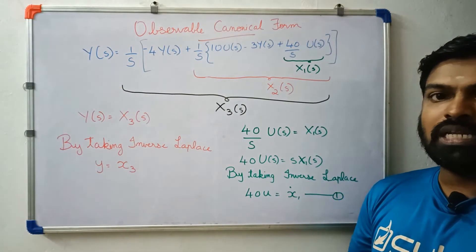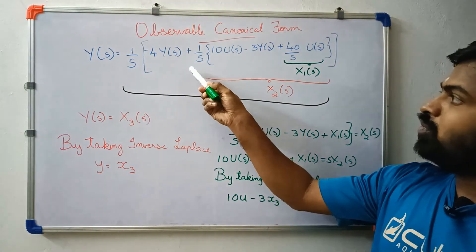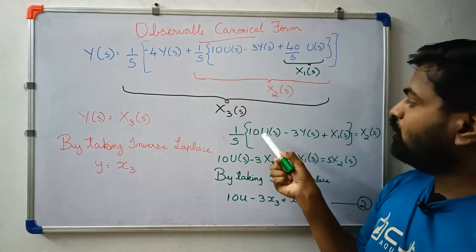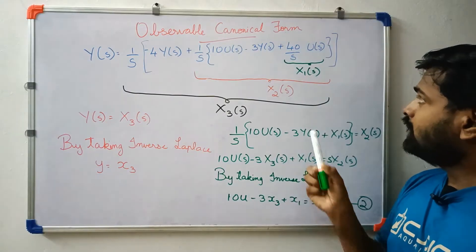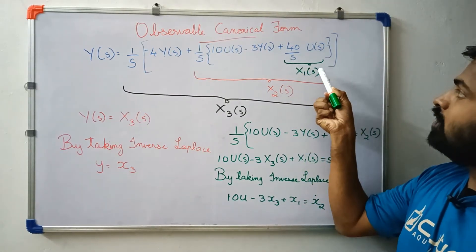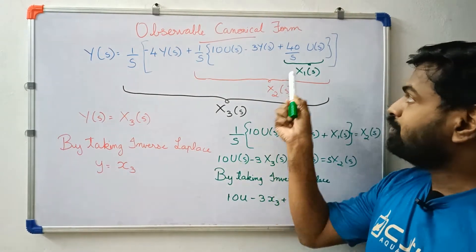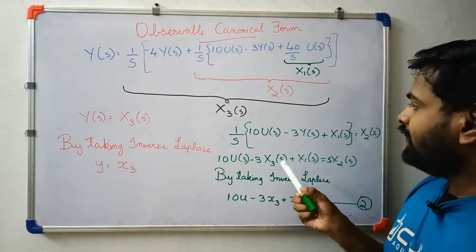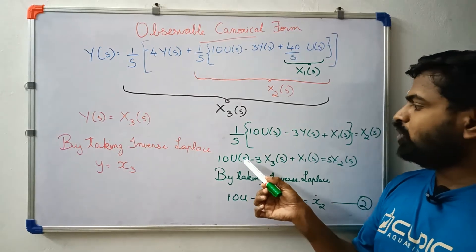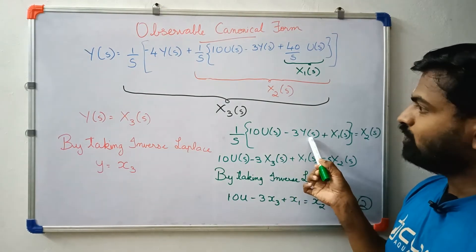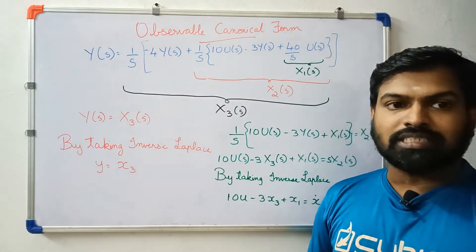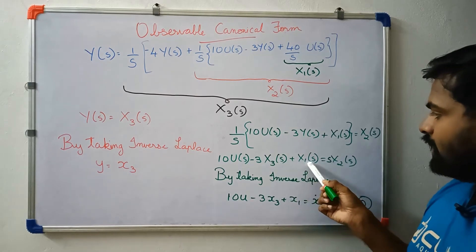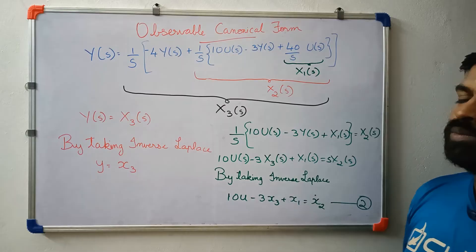The second equation involves 1 over s times [10 U(s) minus 3 Y(s) plus 40 over s times U(s)], with x1(s) equal to x2(s). Cross-multiplying: 10 U(s) minus 3 x3(s) plus x1(s) equals s times x2(s). Inverse Laplace gives x2 dot equals 10u minus 3x3 plus x1.